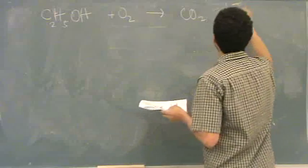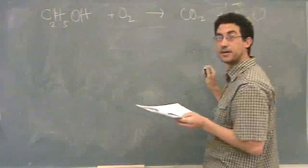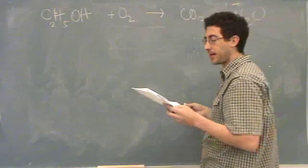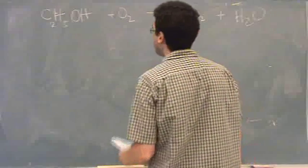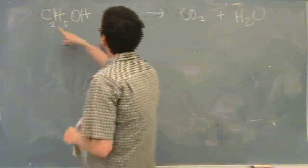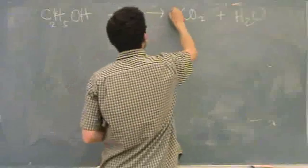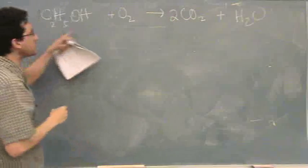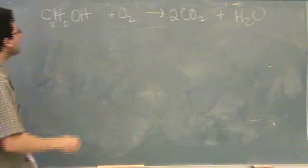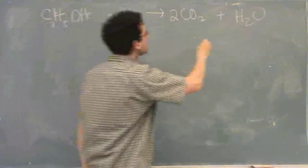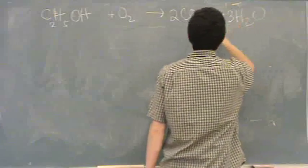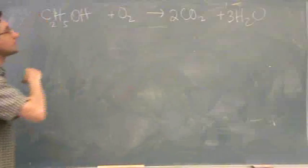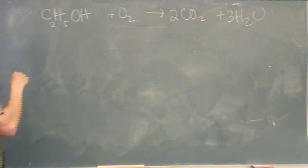You go CO2 and water are always the products of combustion. After that you just balance. So one carbon here, so I better put two. There's two carbons there, so I better put two there. There are six hydrogens here.